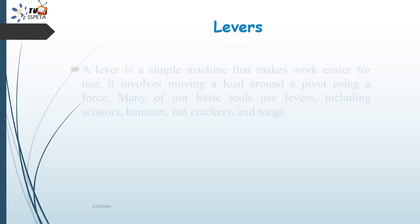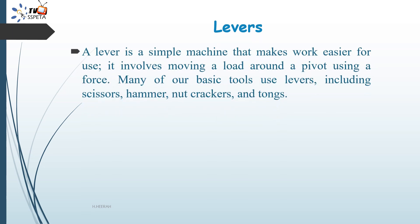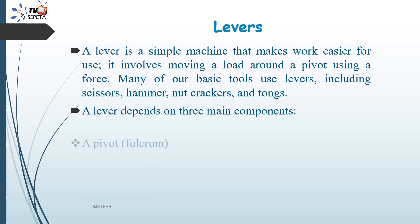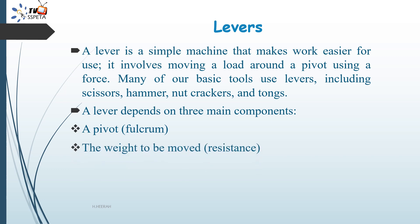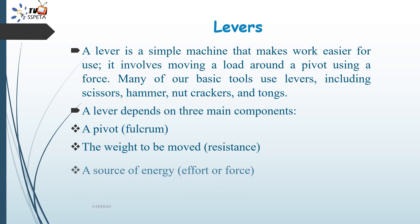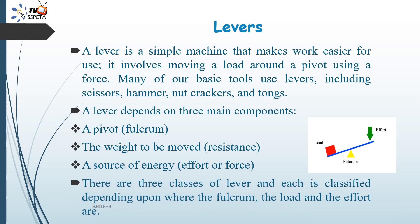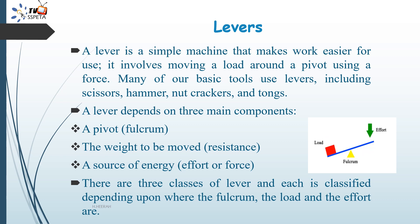A lever is a simple machine that makes work easier. It involves moving a load around a pivot using a force. Many basic tools use levers, including scissors, hammer, nutcrackers and tongs. A lever depends on three main components: the pivot, also known as the fulcrum; the weight to move, which is the resistance; and a source of energy, called effort or force. There are three classes of lever, each classified depending upon where the fulcrum, the load, and the effort are.